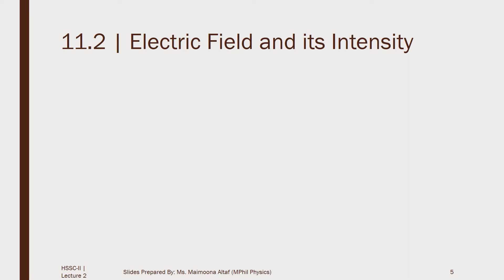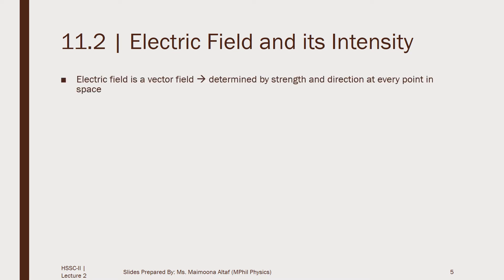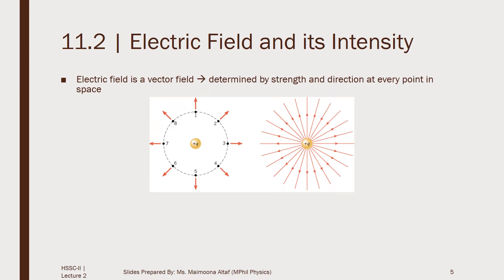The electric field is characterized by its strength and the direction at every point in space. The strength and direction of electric field can be determined by placing a unit positive charge in that field. The strength of electric field at a point in space determines the amount of force that a charge will experience if it is placed at that point. The direction in which the unit positive charge moves or tends to move is the direction of the electric field. A single vector quantity containing information about the field strength and its direction at that point is denoted by the electric field intensity.